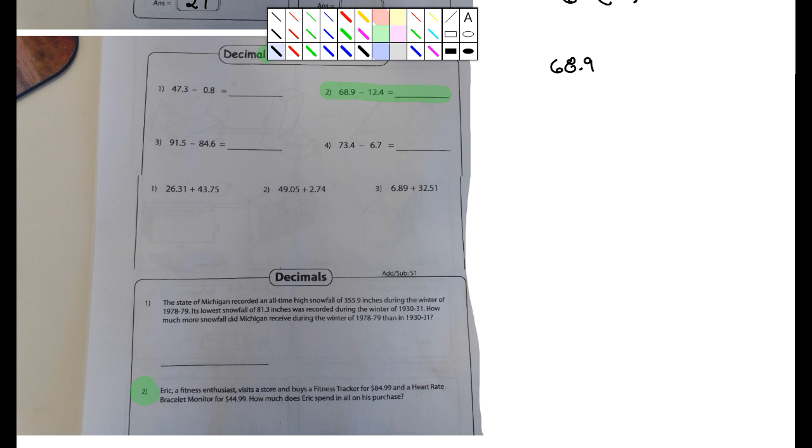68.9 and we're subtracting 12.4. Make sure you line up the decimals, that's really important. A lot of you are still kind of being sloppy with your writing. So four from nine is five, bring the decimal straight down, two from eight is six, one from six is five. So there's your answer, it's 56.5.